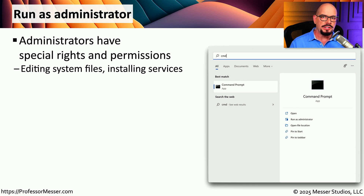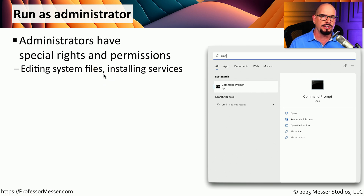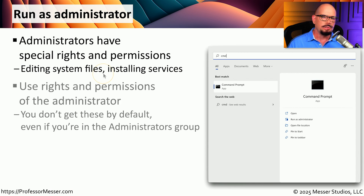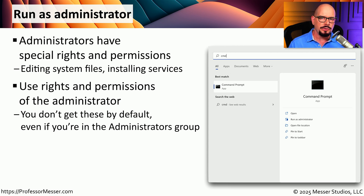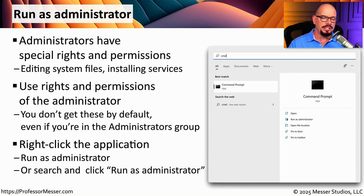As a Windows user, you have access to run applications, start your browser, close applications, and shut down your system. But there may be certain tasks that require additional rights and permissions — for example, editing a system file, installing a new application, or modifying a service might require administrator rights. To use these administrator rights and permissions, you need to specify that you'd like to use them. Even if your user account has been added to the administrators group, you must explicitly say that you want to run a particular application as administrator by right-clicking on the application name and choosing Run as Administrator.